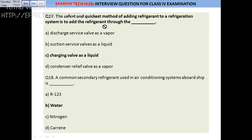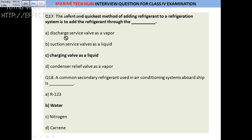Question 17: The safe and quick method of adding refrigerant to the system is to add liquid, not vapor — vapor takes a lot of time. When charging, make sure the charging valve is positioned after the condenser on the liquid line. Do not charge on the suction or discharge side of the compressor.